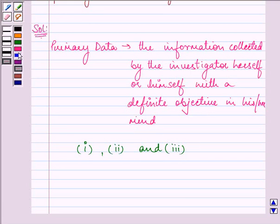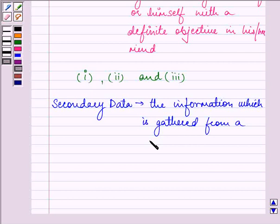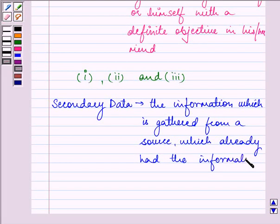Whereas when we are talking about secondary data, it is the information which is gathered from a source which already had the information stored.